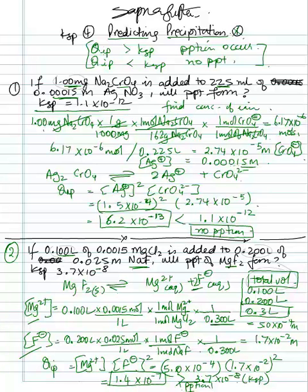Both examples give you slightly different things. In the first one, a solid was given to you. In this one, you're adding two solutions, so the important thing with two solutions is that you have to find the total volume. Initially in the first problem, there was only one volume.